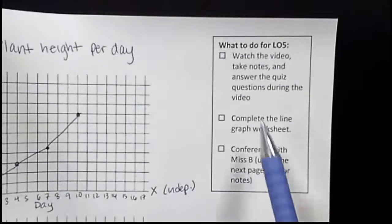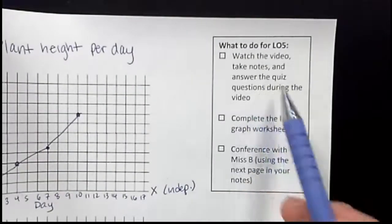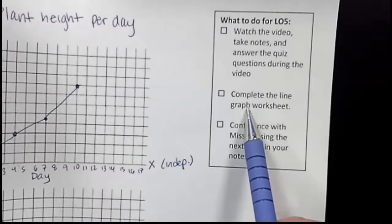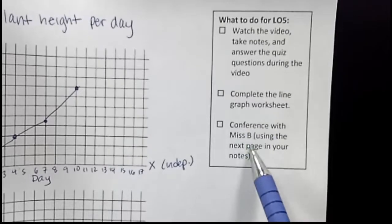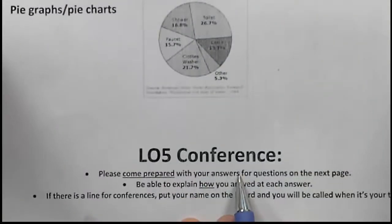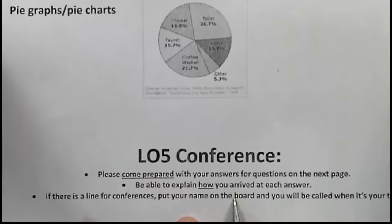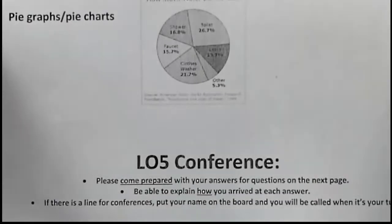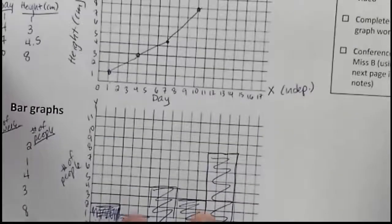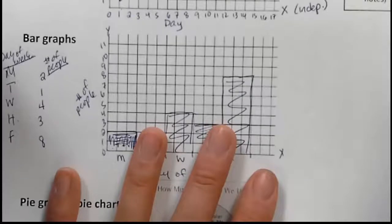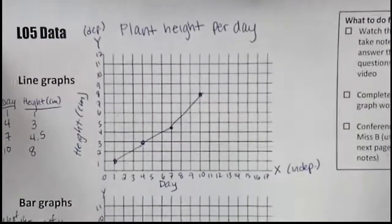Now that we're done with this, your next steps: watch this video done, and you've done the quiz questions inside of it. Complete the line graph worksheet, so go to the crate and grab the worksheet that you need. And then the next page in your notes, you're going to be doing a conference with me. Come prepared. Look at it, write on it, answer it. Come prepared to talk to me about your answers. Be able to explain how you arrived at each answer. If there's a line for conferences, start a list on the board. Just put your name down and I'll call you up when I am ready for you. And if you have any other questions, if none of this makes sense, make sure you come see me because this is really important stuff that we'll be hitting all year long.